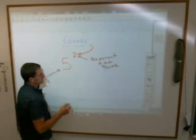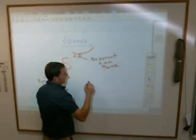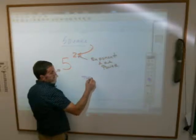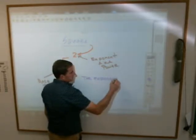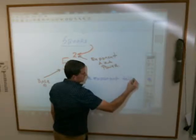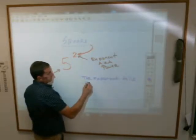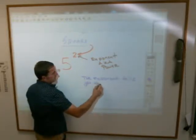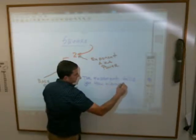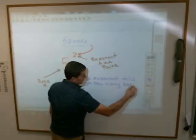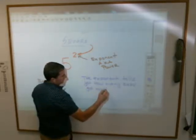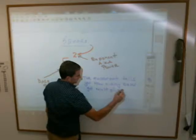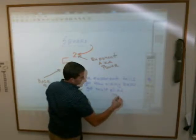And write this down because this is the important part here. The exponent tells you how many bases get multiplied together.